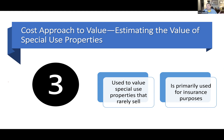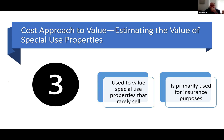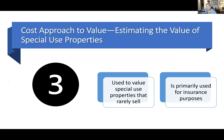The cost approach is super inaccurate, but it's better than labeling the property with a value of zero — which is what the other approaches would produce. Someone said the cost approach is so inaccurate, and yes, it is terrible — except it's better than every other possible method for that property. Sometimes bad is all you've got. A rice cake is a terrible option, but if it's the only option, you eat it.